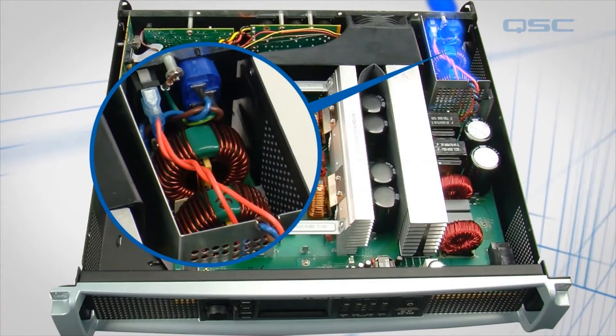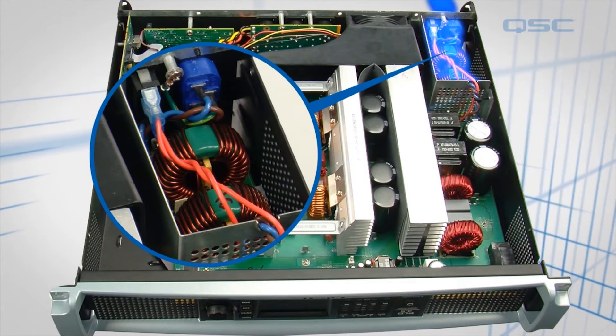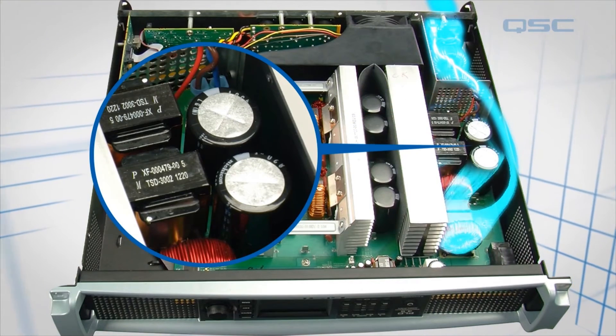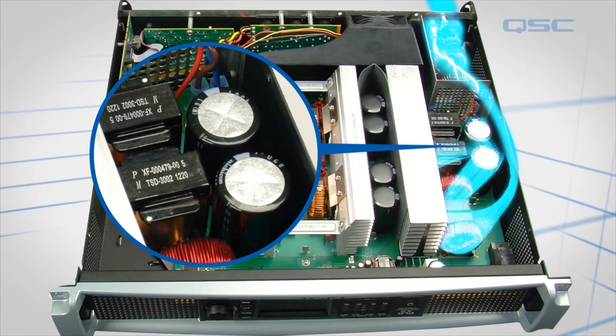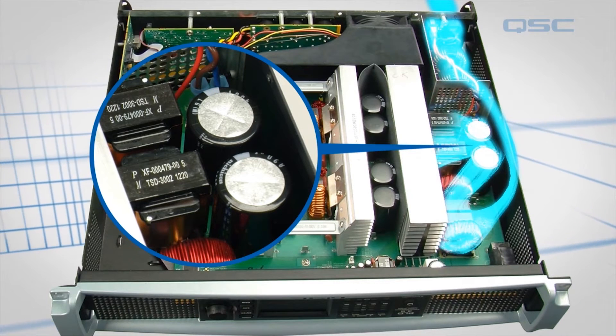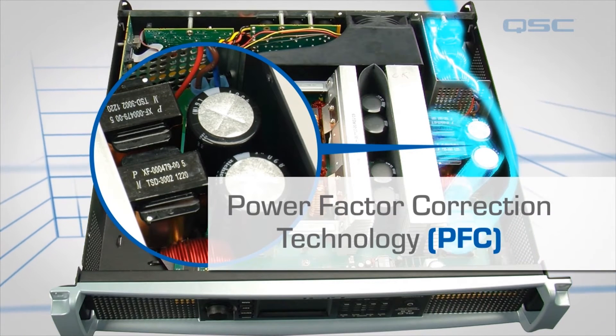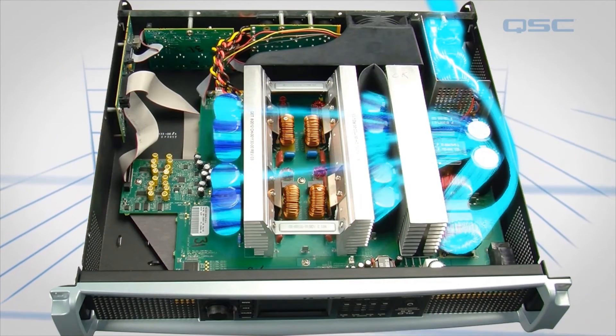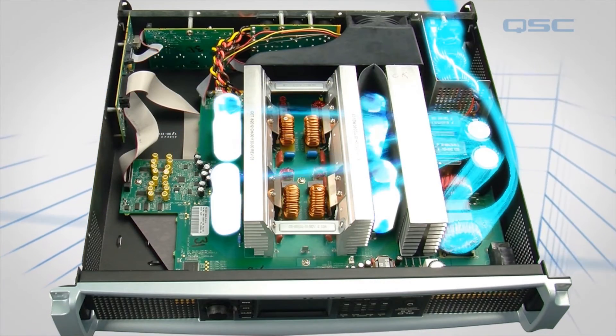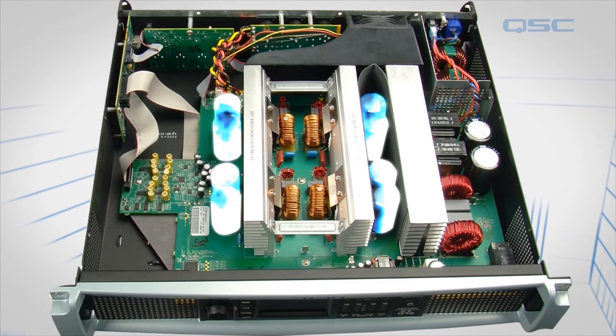Power comes into the amplifier, goes through the line filters, and enters these power supplies. The majority of the power is converted from AC into DC using power factor correction technology and is used to charge the amplifier's power capacitors. There, the power is available to be fed into the amplifier's power modules.